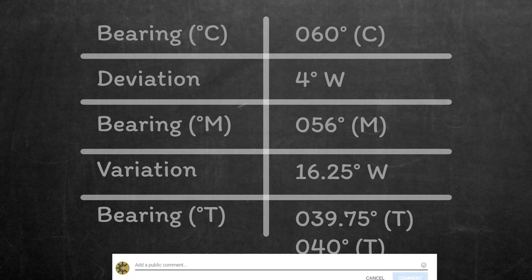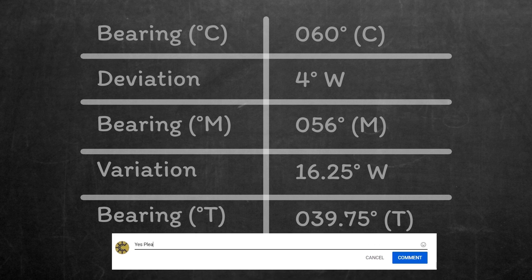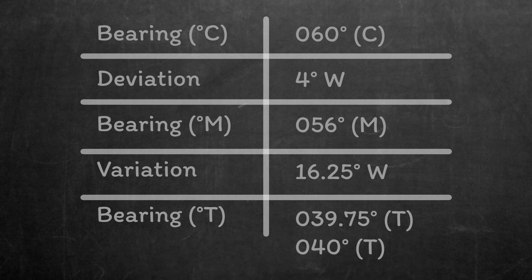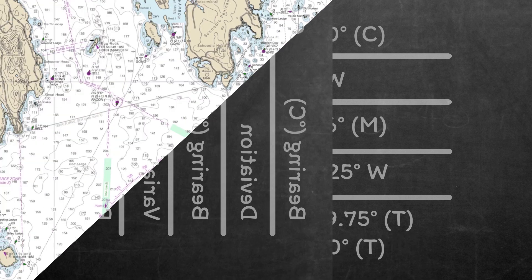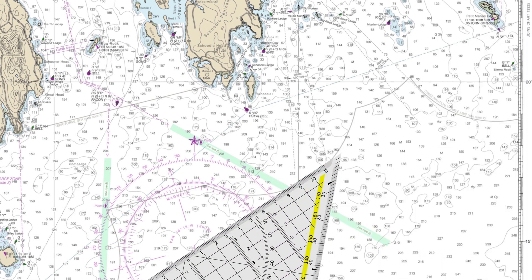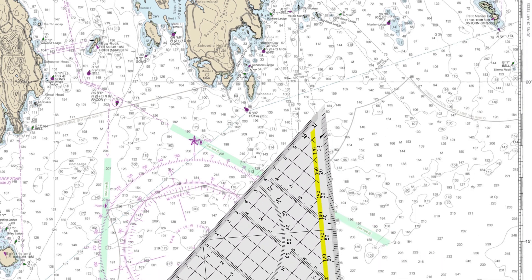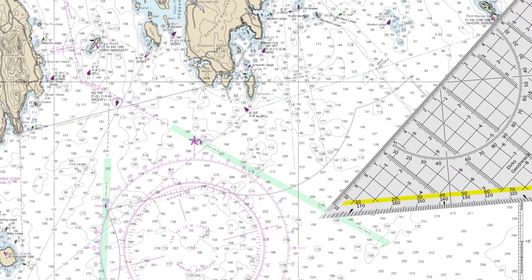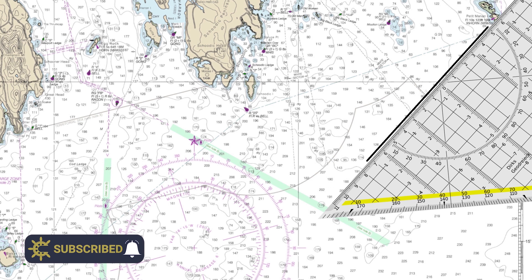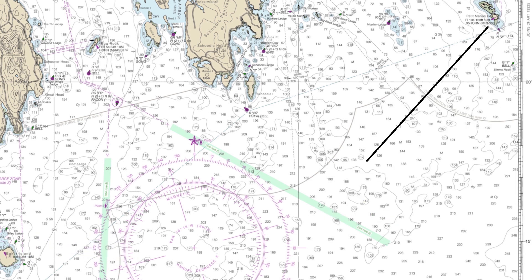Do please tell me in the comments below if you'd find further explanations of correcting compass bearings useful, and we can look at doing that in a future video. With our true bearing, we can then plot straight onto the chart. We'll just use the compass roses lined up with 040 and transfer that line to the lighthouse. Our line of position runs away from the lighthouse, and tells us that we're somewhere along the line at a time of 1500. We indicate the potential continuation using a single arrow at the end.